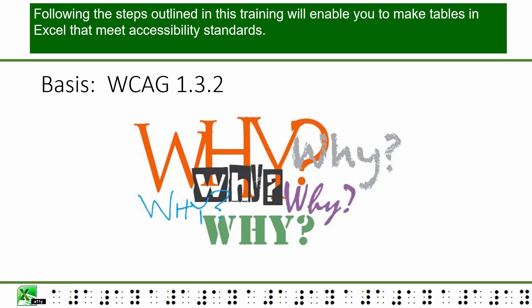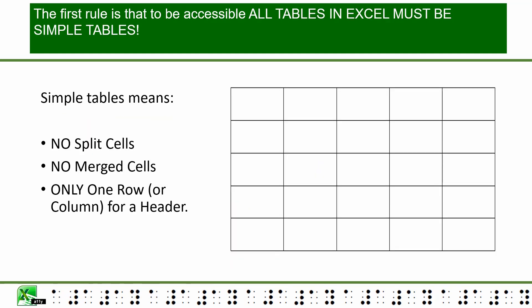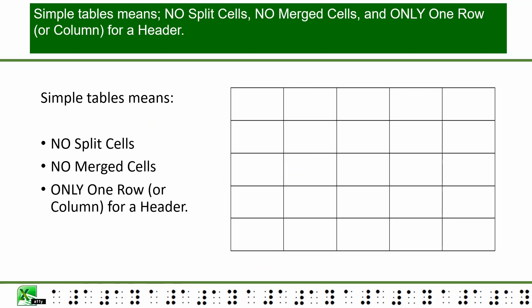Following the steps outlined in this training will enable you to make tables in Excel that meet accessibility standards. The first rule is that to be accessible, all tables in Excel must be simple tables. Simple tables means no split cells, no merged cells, and only one row or column for a header.